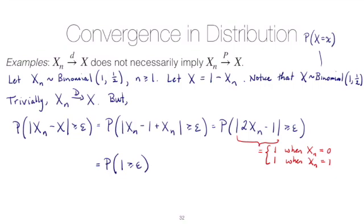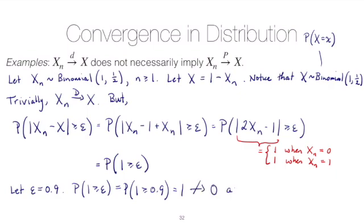This is going to be easy to show we don't have convergence in probability. We can let ε = 0.9, and then the probability that 1 ≥ ε is P(1 ≥ 0.9) = 1, which certainly does not converge to 0 as n → ∞.